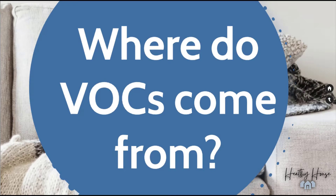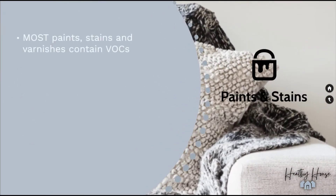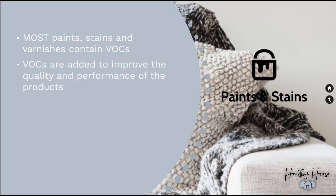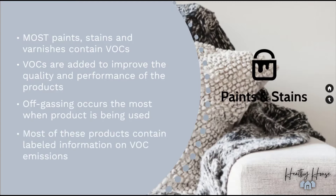There are hundreds of VOCs both in nature and in our homes, and some are more harmful than others because they exist at room temperature, meaning we're almost always being exposed to them. Where do these VOCs come from? First, paint and stains: paint, stains, and varnishes commonly all contain VOCs. They typically off-gas with an odor, but not always. VOCs are used in these products to improve quality and performance, and they off-gas the most while being used.